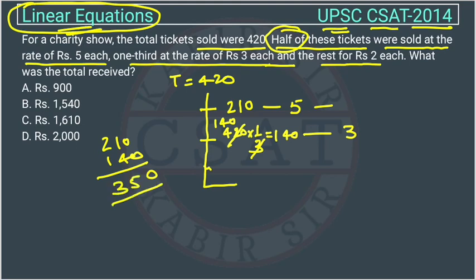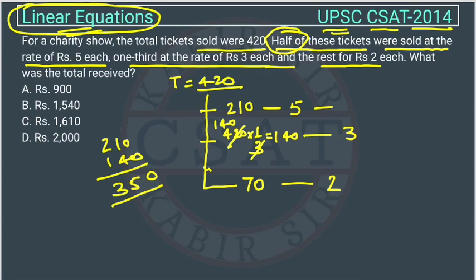And we will deduct this 350 from 420, so it will be 70. So 70 tickets are sold at the rate of 2 each. The question is asking the total amount of money.